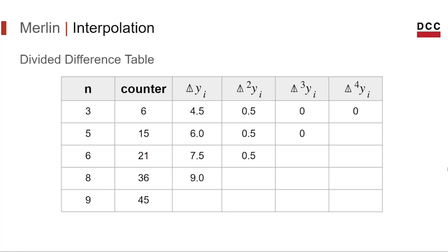With these points, we can build the divided difference table. This is the first step of Newton's divided difference interpolation. As you can see, the greatest order divided difference we have found has degree 2, meaning that the cost function for bubble sort will have a maximum degree of 2. With this table, we can continue the process and generate the polynomial that describes the bubble sort algorithm. This is the polynomial we found for this implementation with these inputs, and it describes the worst case of the bubble sort algorithm, counting the number of iterations used to sort these vectors.